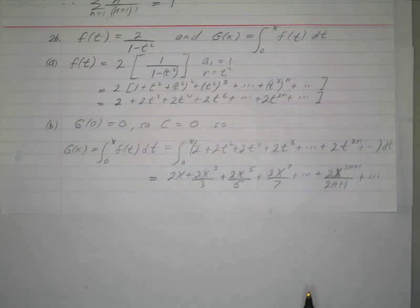So those are the first four terms and the general term of the McLaurin series for g, which is just taking the integral. Okay? And that's all there is to 26.